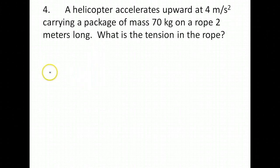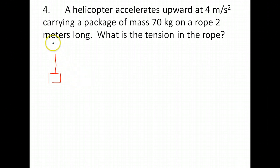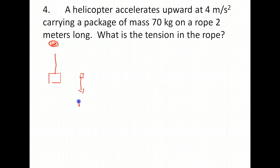We've got a box with a cable attached to it, and we need to draw a free body diagram. Somewhere up above is a helicopter also attached to that rope. The free body diagram is so important — it's one of our very first steps. We've got the force of gravity pulling down on that box and the force of tension pulling upwards on that box.